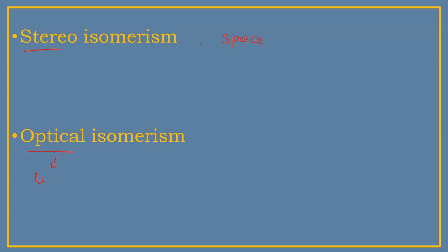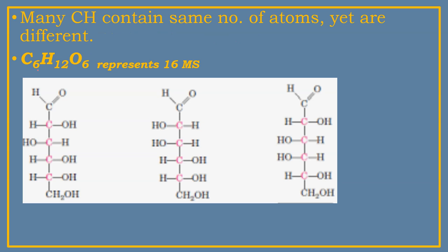What is meant by stereo? Stereo means space. What is meant by optical? It is related to light — carbohydrates differ in the rotation of light, which is called optical isomerism. If carbohydrates differ in the arrangement of groups in space, they are said to be stereo isomers. C6H12O6 is the formula for many carbohydrates; they contain the same number of atoms yet are different. This is possible because of stereo isomerism, and C6H12O6 represents around 16 monosaccharides.